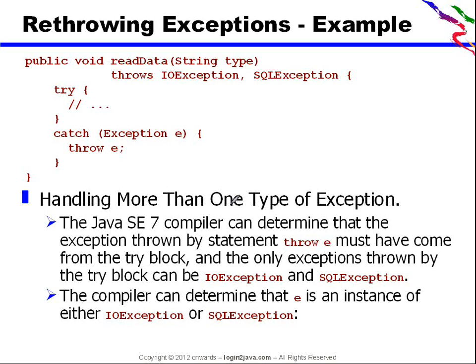Let's see another example. It is throwing two exceptions: IOException and SQLException. This particular code can throw these two types of exceptions. But you are using a catch exception E.